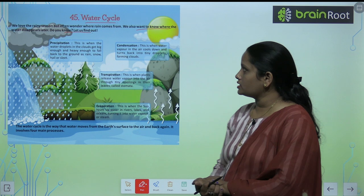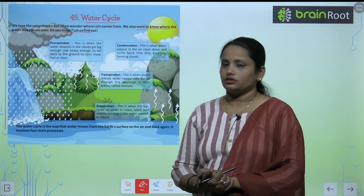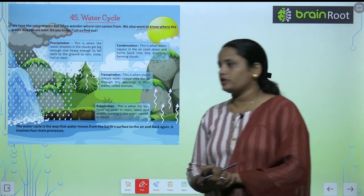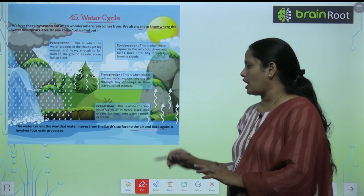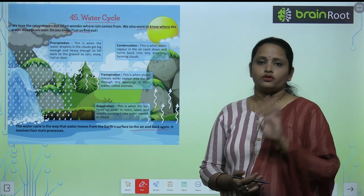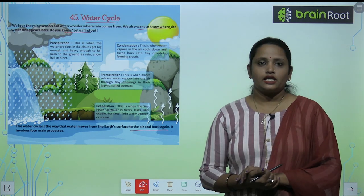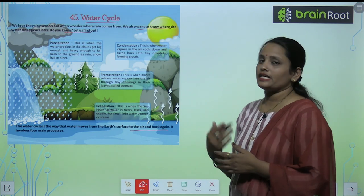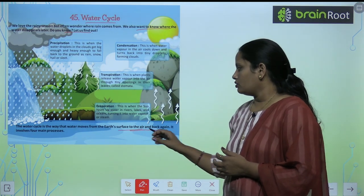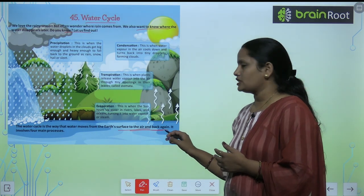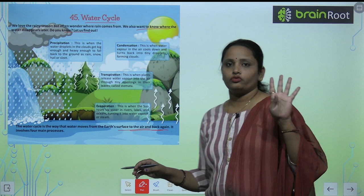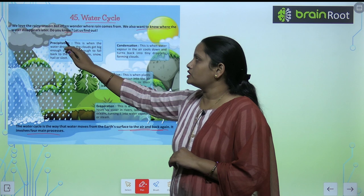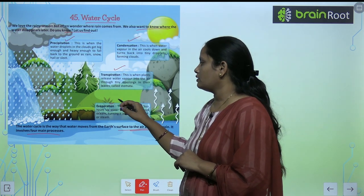The water cycle is a way that water moves from the earth's surface to the air and back again. It involves four main processes. These are precipitation, condensation, transpiration and evaporation.